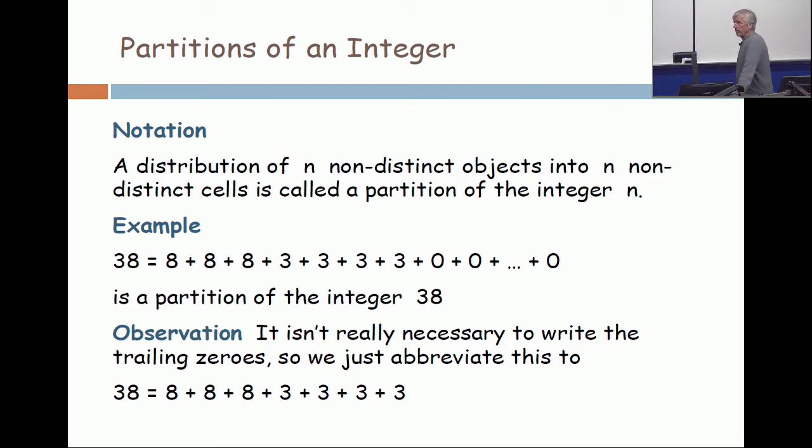And then we observe it's not really necessary to write the zeros is it? Because anybody can figure out how many zeros there are. If, in the bottom line, there's seven non-zero parts, so there are 31 zero parts. So don't write the zeros. Again, we're applying our maxim to be selectively lazy.